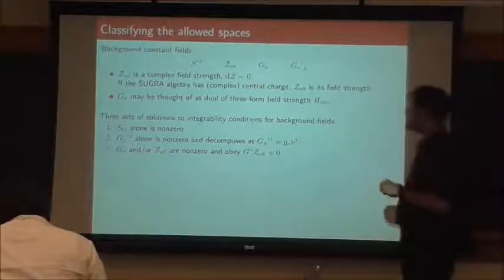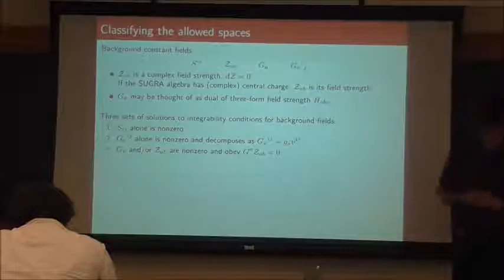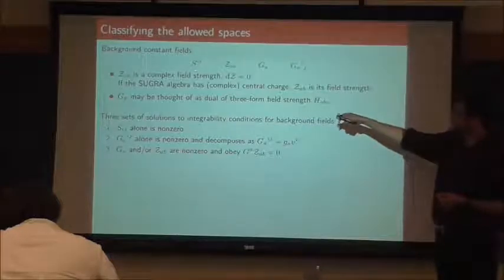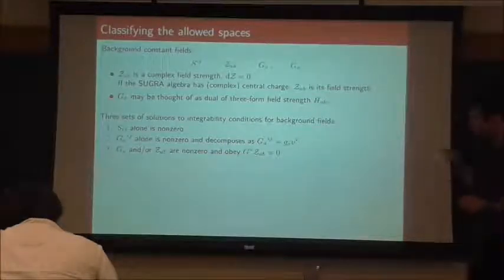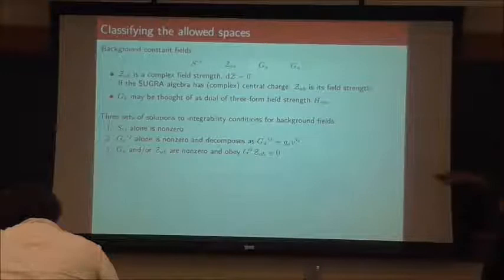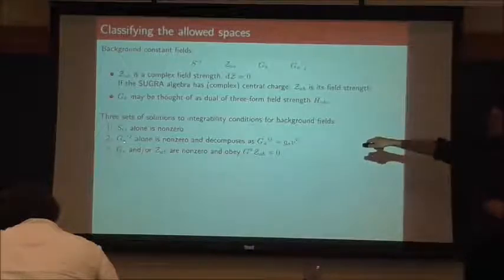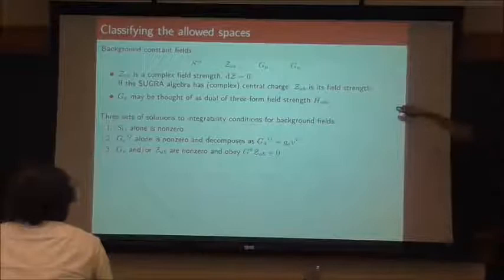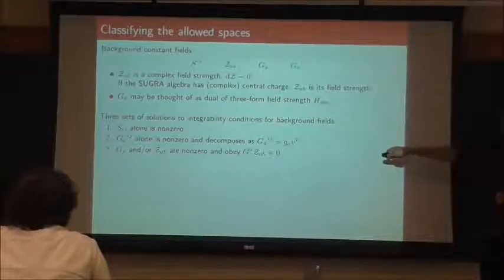We end up with three sets of solutions for integrability conditions. They basically break down into three options. The first one is you just have S_{IJ} turned on — that gives you AdS₄ in Lorentzian signature. Another option is the other isotriplet G_{IJ} alone is non-zero, and it has to decompose as a product of a vector and an isovector. And the third option, which is the most interesting, is the one where you can have G and Z turned on — you can have one of them turned on, the other one turned on, or both turned on. If both are turned on, you have a certain transversality condition.